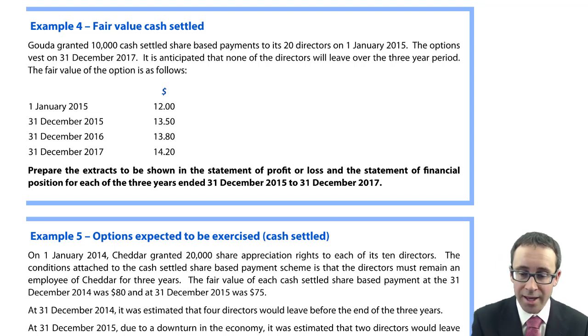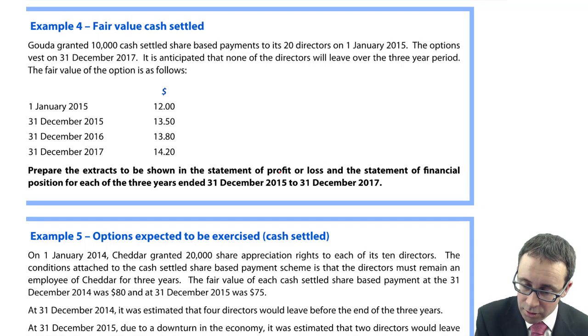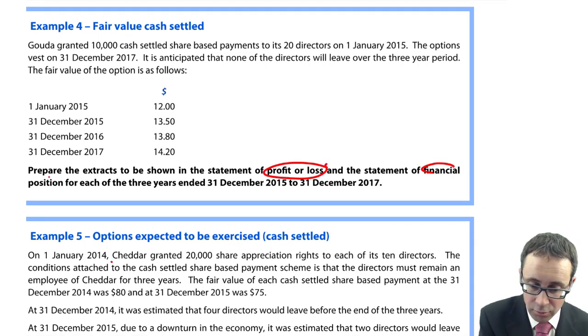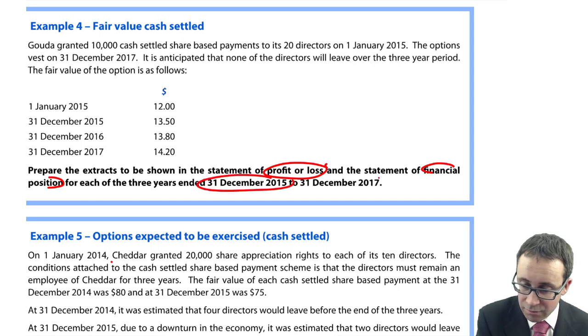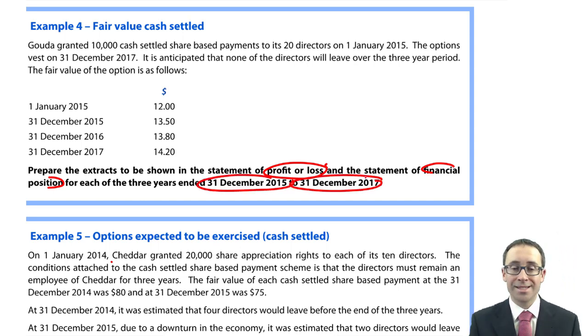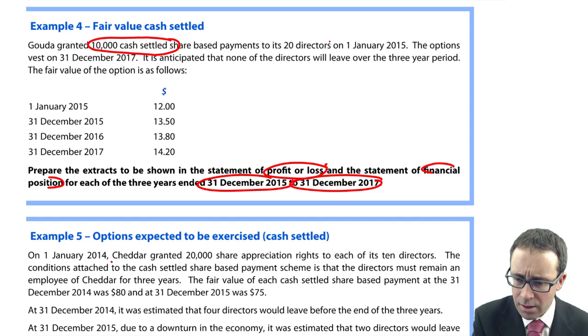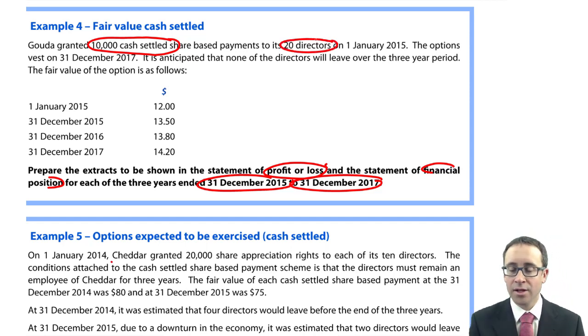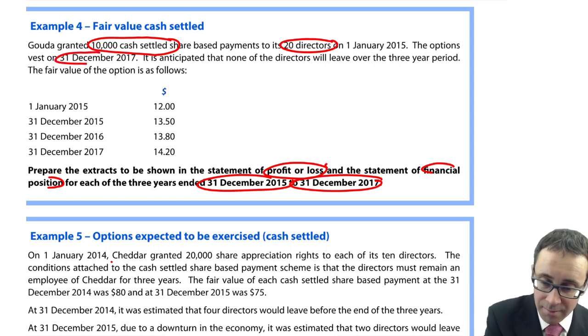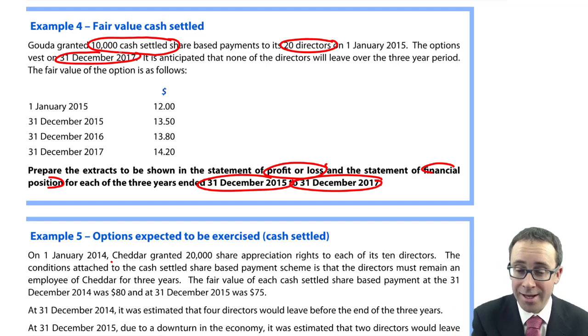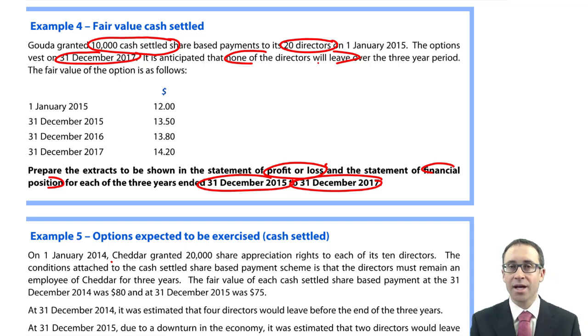Let's go through and have a look at a couple of examples. It says prepare the extracts to be shown in the statement of profit or loss and the statement of financial position for three years from December 2015 to December 2017. What you've got here with Gouda, we have 10,000 cash-settled share-based payments, 20 directors. The grant date is 1st of January 2015. The options vest December 2017, so that's three years. And again, keeping it really simple, none of the directors will leave.